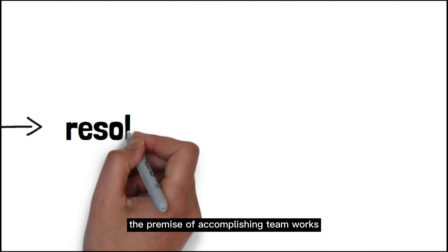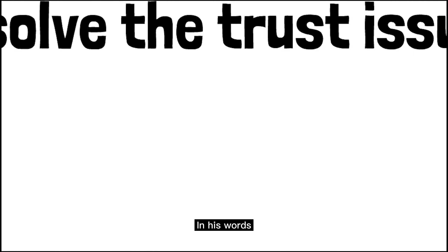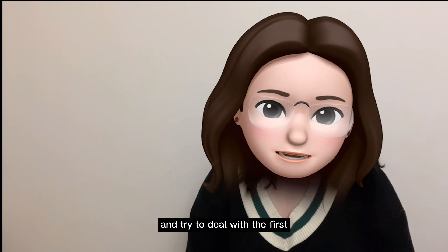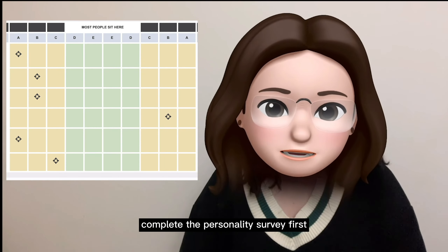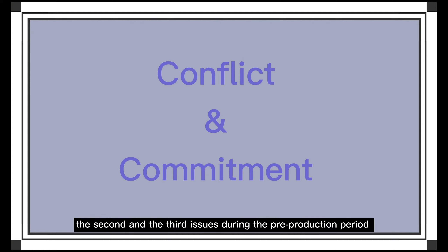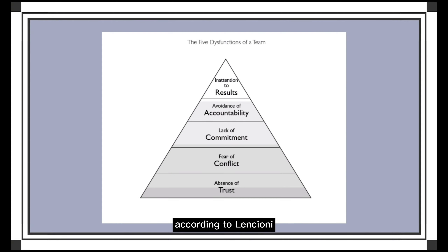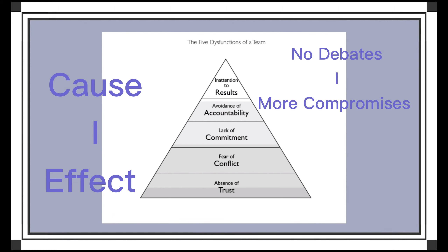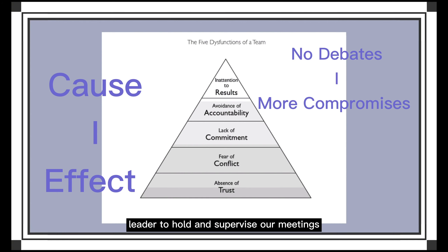In his opinion, the premise of accomplishing teamwork is to resolve trust issues. The positive way is to be widely open to each other and build trusting relationships. Before pre-production, we were aware of this potential problem and tried to deal with it first — each member completed a personal survey to get to know each other more clearly. Moreover, we set up casual Facebook groups to communicate more conveniently. We also came across the second and third issues during pre-production. According to Lencioni, it's more like a cause-effect circle: fear of engaging in passionate debates leads to negative compromise and eventually lack of commitment to a clear plan. To solve this, we voted up a project leader to supervise our meetings so that each member fully clarified their opinions.